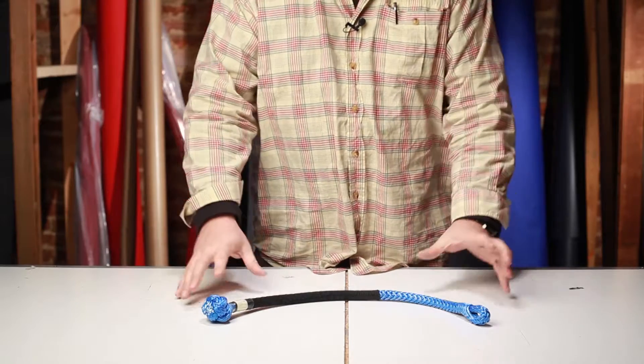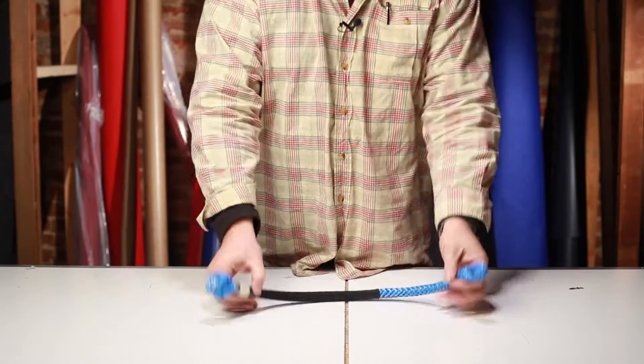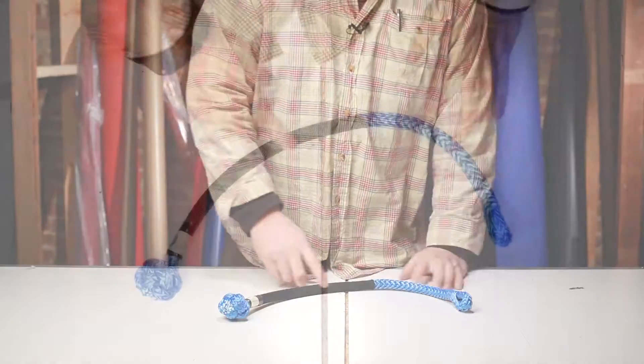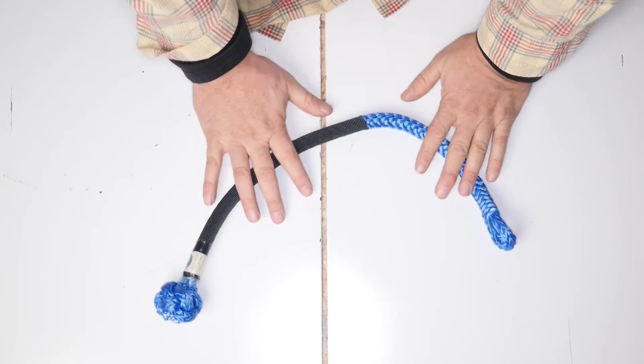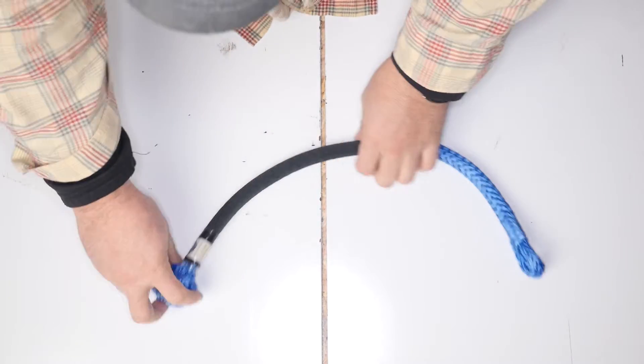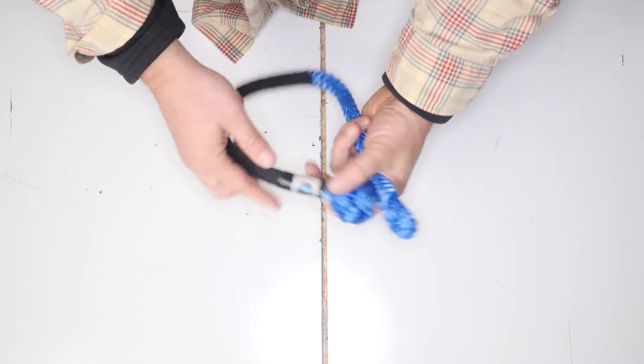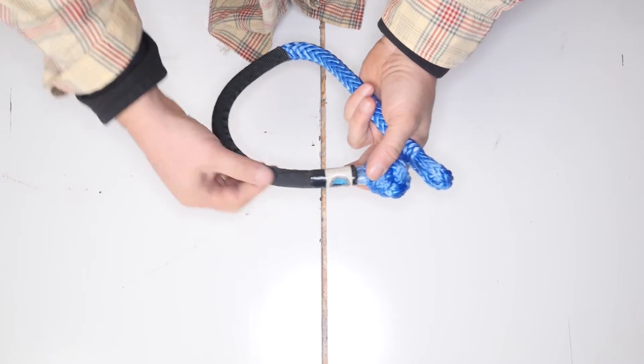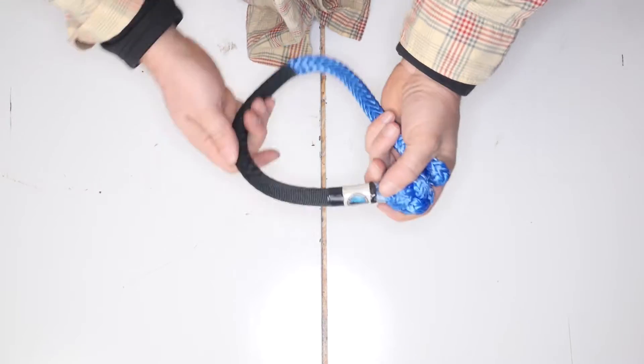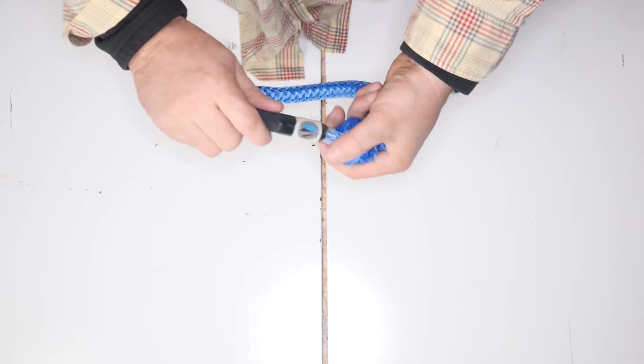So today we're going to take a look at a soft shackle. Now this is a pretty unassuming looking little guy, right? It's a piece of 3/8" blue AM steel, US made. Blue is US made - that's exciting for us. It's got a piece of tubular nylon wrapped around it so you get some abrasion resistance. Save the shackle, right?